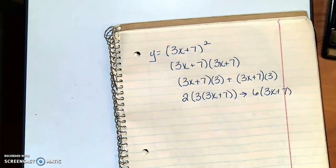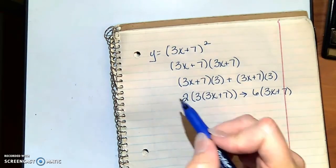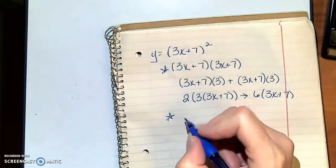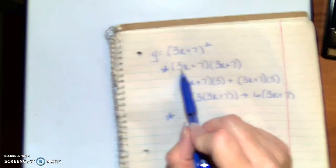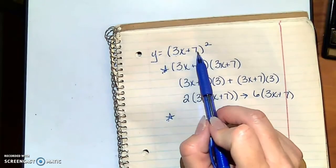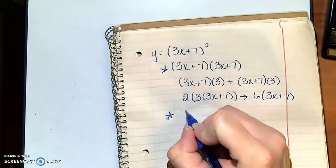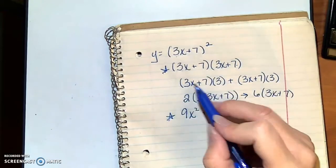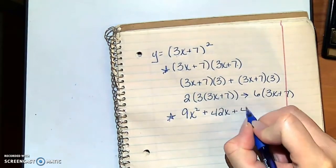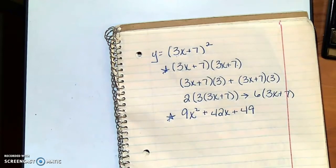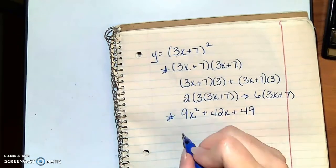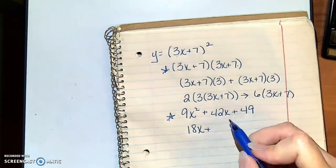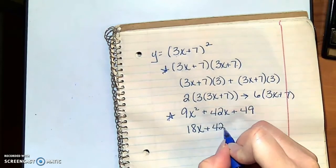Way number two is I could have foiled the whole thing out to start with. Recognizing that this is 3x plus 7 times 3x plus 7, when I foil it, I'll get 9x squared plus 42x plus 49. And now I can take a derivative term by term. The derivative of 9x squared is going to be 18x plus the derivative of 42 is 42.